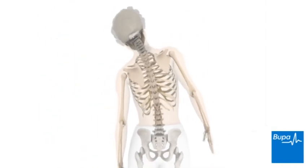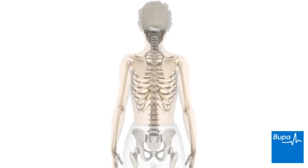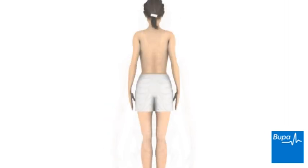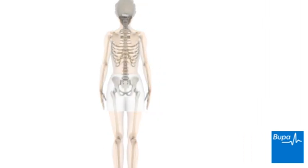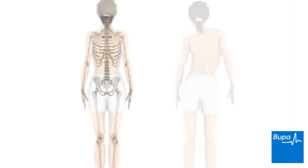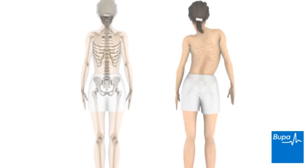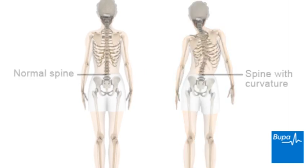This structure of vertebrae and discs is supported along its length by muscles and ligaments. Many people have a slight sideways curvature of their spine, and in most cases this is considered normal. Scoliosis is defined as a curve of more than 10 degrees.